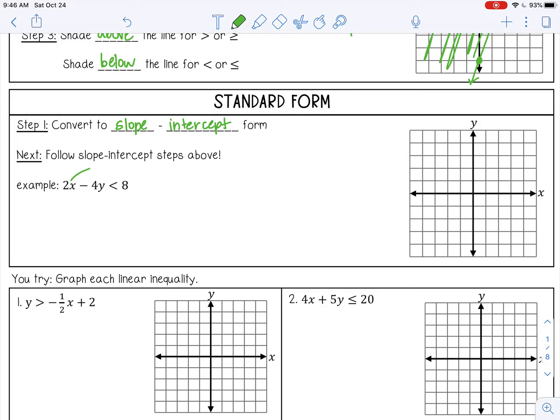I'm going to move the 2x to the other side, so it becomes negative 2x, like I subtracted 2x from both sides. Then I'll divide everything by negative 4. Remember, when you divide by a negative, you have to flip the inequality sign. So now it's y is greater than. Let's simplify these fractions. Negative 2 over negative 4 is positive one-half x. And 8 over negative 4 is negative 2.